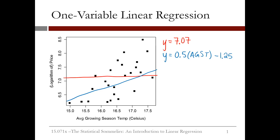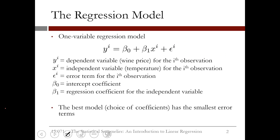Let's make this idea more formal. In general form, a one-variable linear regression model is a linear equation to predict the dependent variable y using the independent variable x. Beta_0 is the intercept coefficient, and beta_1 is the slope of the line, or coefficient for the independent variable x. For each observation i, we have data for the dependent variable y_i and data for the independent variable x_i.